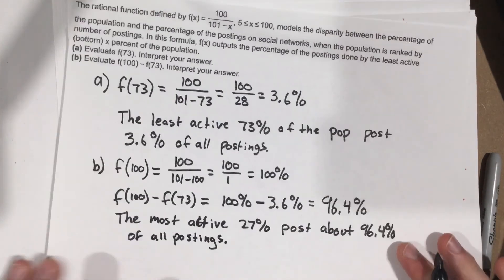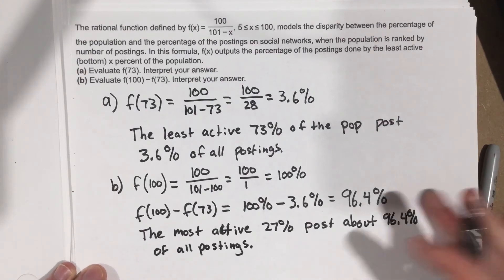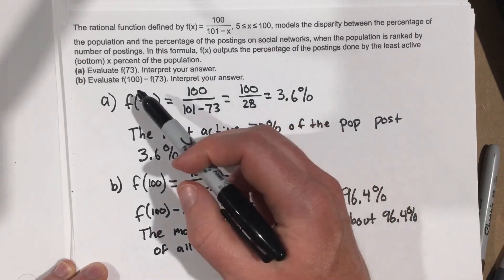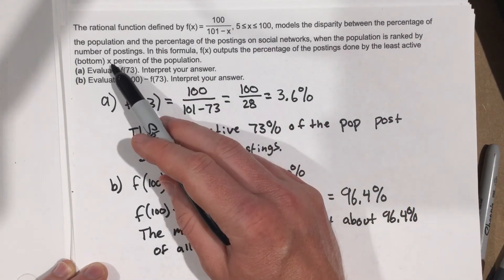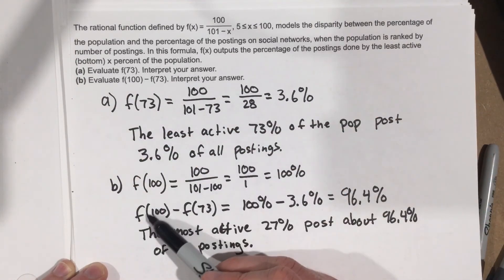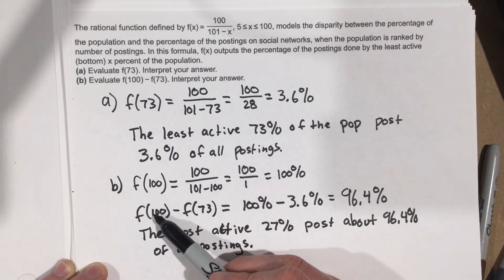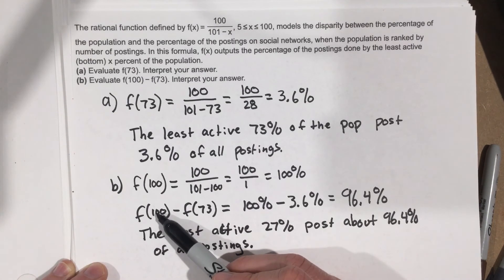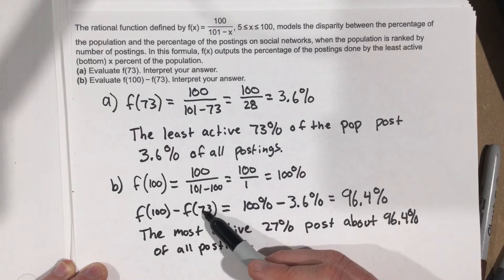Let's break this down one last time. X is the least active bottom percent of the population. We plugged in 100% for the percent of the population and we plugged in 73.